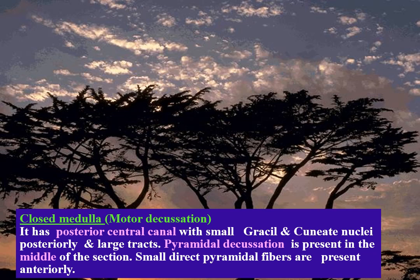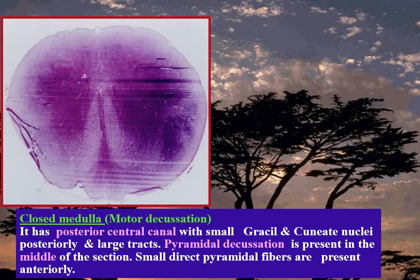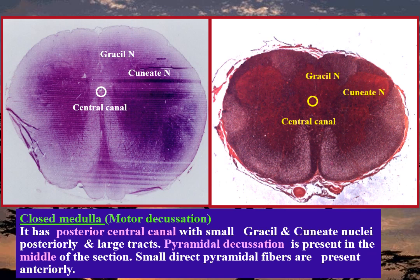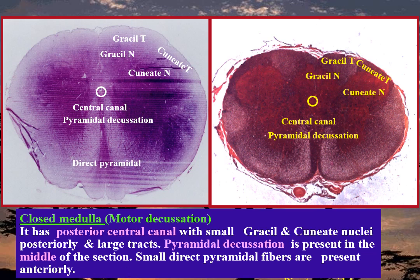Medulla oblongata is studied in three levels: two closed and one open. Closed medulla oblongata at motor decussation — the lower level. It has a posterior central canal with small gracile and cuneate nuclei posteriorly, and large gracile and cuneate tracts. Pyramidal decussation is present in the middle of the section, with small direct pyramidal fibers present anteriorly.